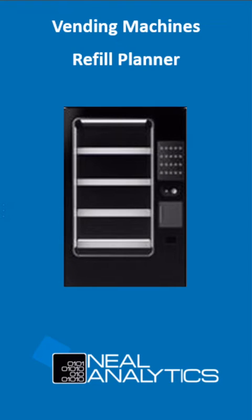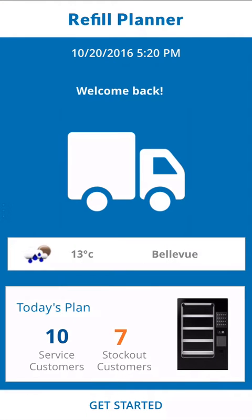Let's begin by taking a look at the homepage. When the user logs into the app, the homepage provides a high-level view of their day, including their workload. In this case, 10 standard renewals, as well as 7 imminent or current stockouts.